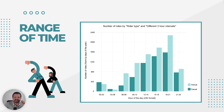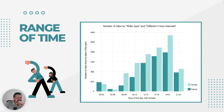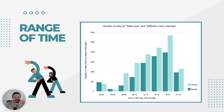In this graph, we can observe the usage patterns of our bikes by the number of rides and time range in a day. It is clear that the majority of usage occurs between 9am and 9pm, with a noticeable peak for annual members between 6pm and 9pm, probably because they are using our bikes to commute home from work during that time.